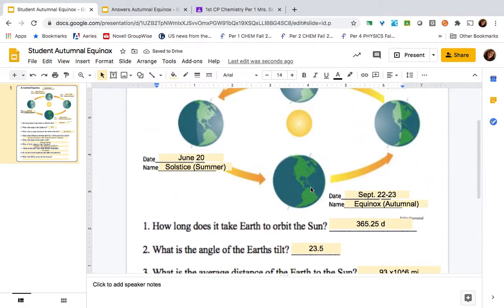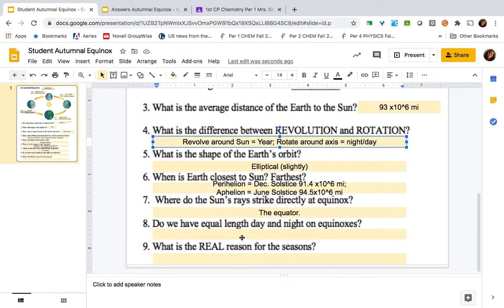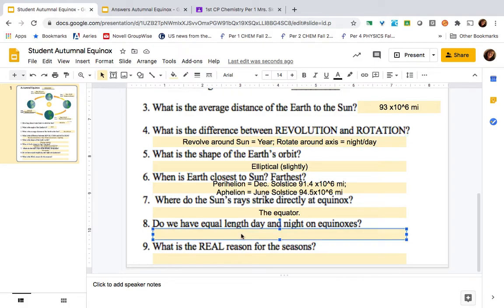So, the Latin equinox means equal night. We don't really have equal length night and days. At the equator, it's really close. But there's some definition thing about how sunset and sunrise. Sunrise is when the sun's peeking over the horizon. Sunset doesn't happen until it's all the way under the horizon. So, there's some of that variation.